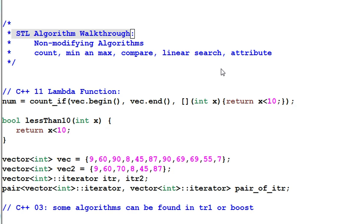During the walkthrough, I'll be using C++11 lambda function a lot. If you are not familiar with lambda function, don't be scared. Lambda function is just a function without a name. And here is an example of lambda function. It takes an integer parameter x and returns if x is less than 10. So this simple lambda function is the same as this regular function.